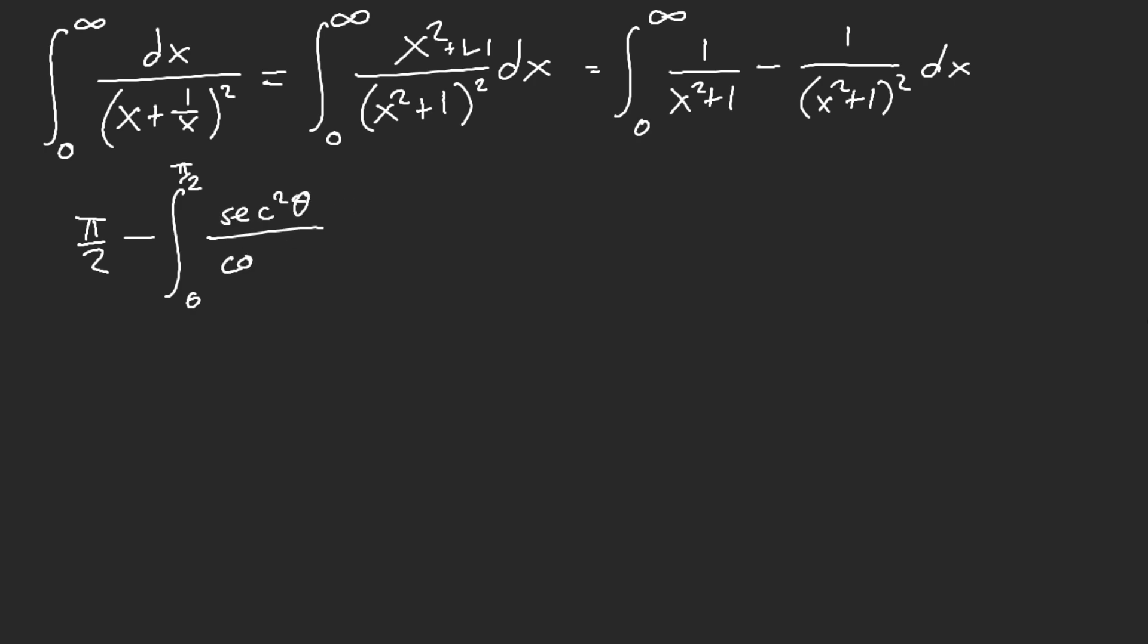not cosine. This is secant fourth θ, which equals to cosine squared θ. Which we know that this is equal to π over 4 by Wallis's trick.